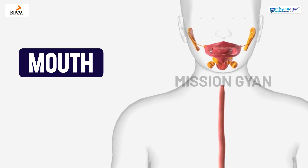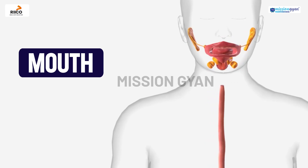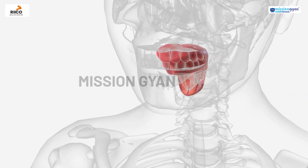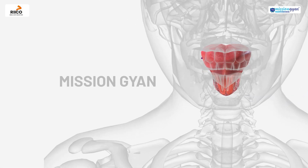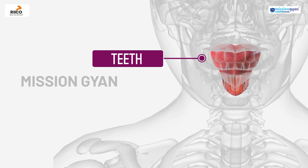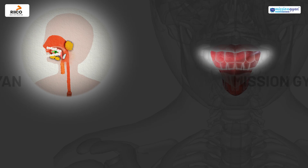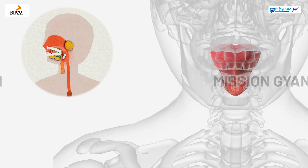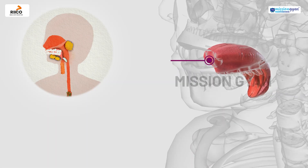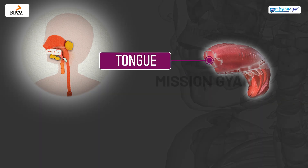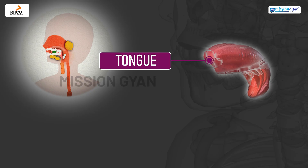Digestion begins in the mouth. Our teeth break the food into smaller pieces through chewing, making it easier to swallow. The tongue helps mix the food with saliva and pushes it to the back of the mouth.